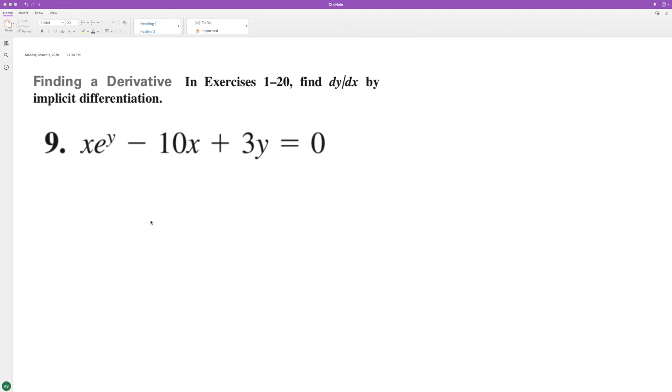So what's going to happen here is with implicit differentiation, using the product rule here, so we get e raised to the y, because the derivative of x is just 1.